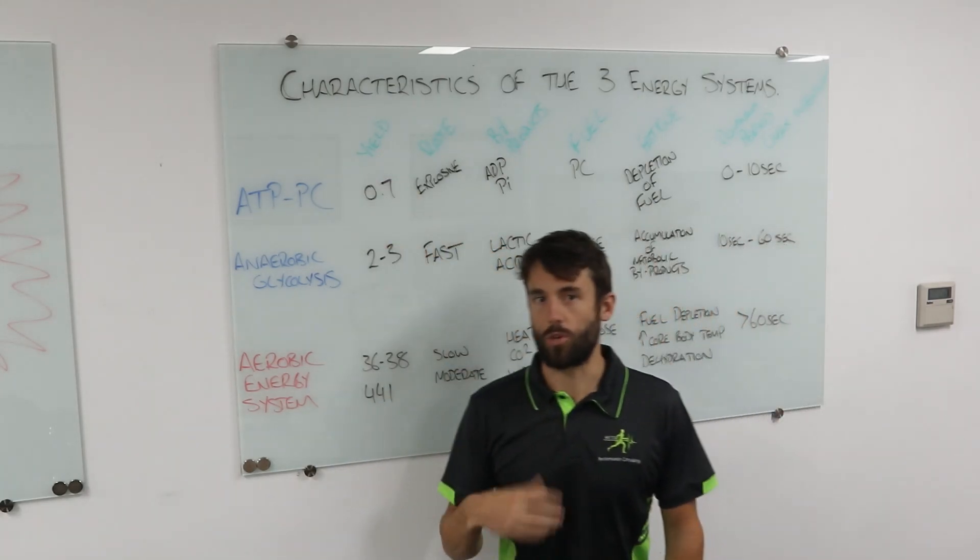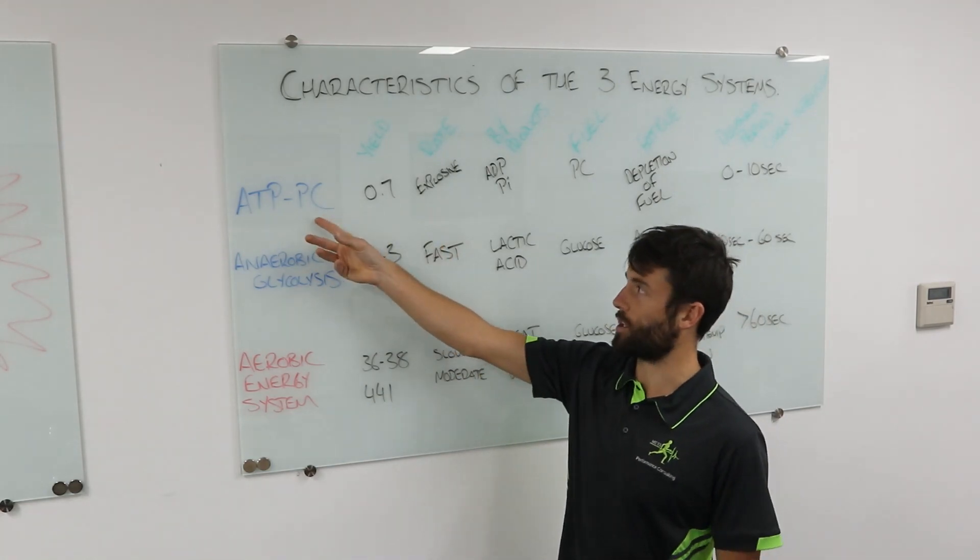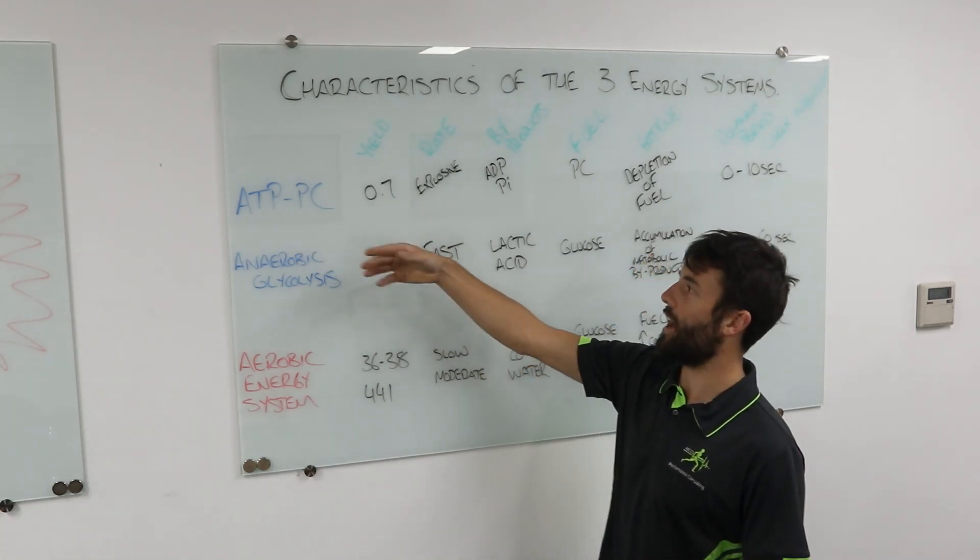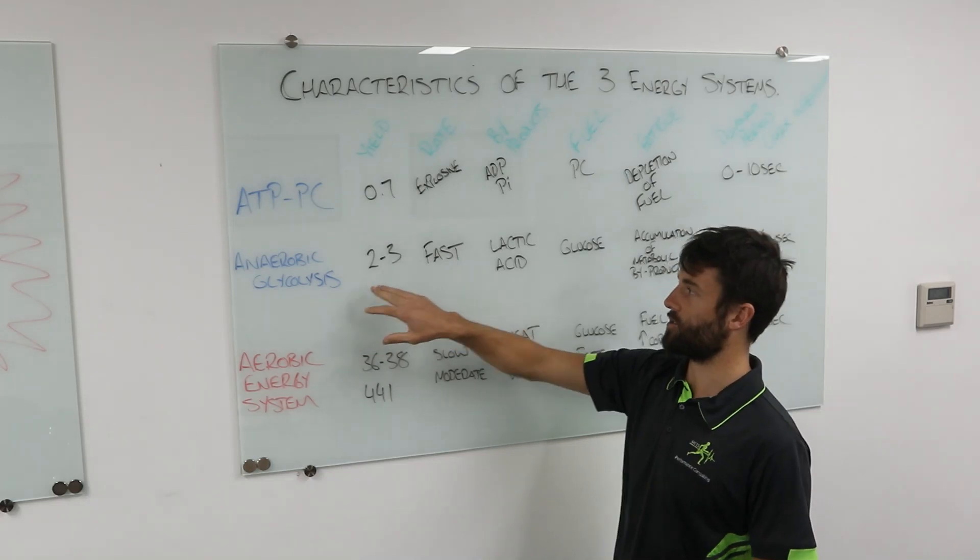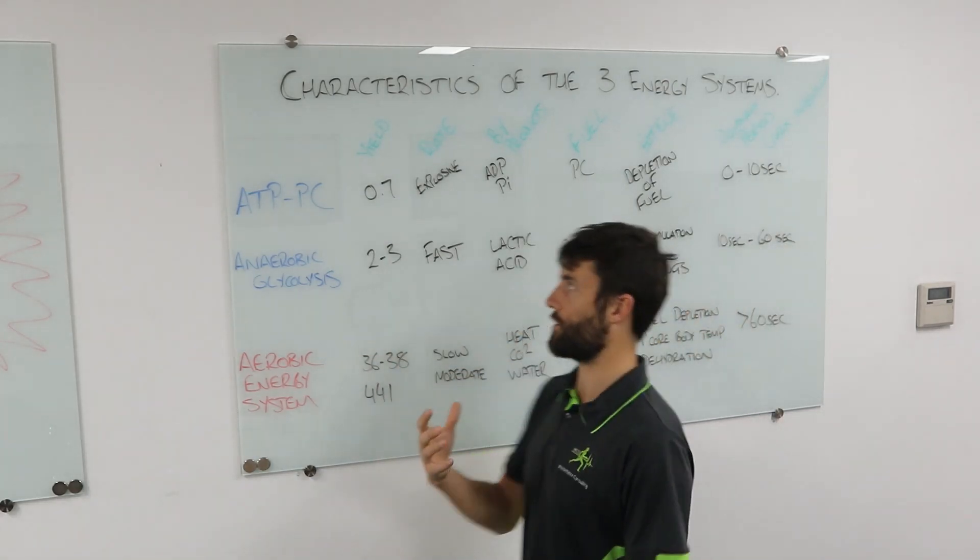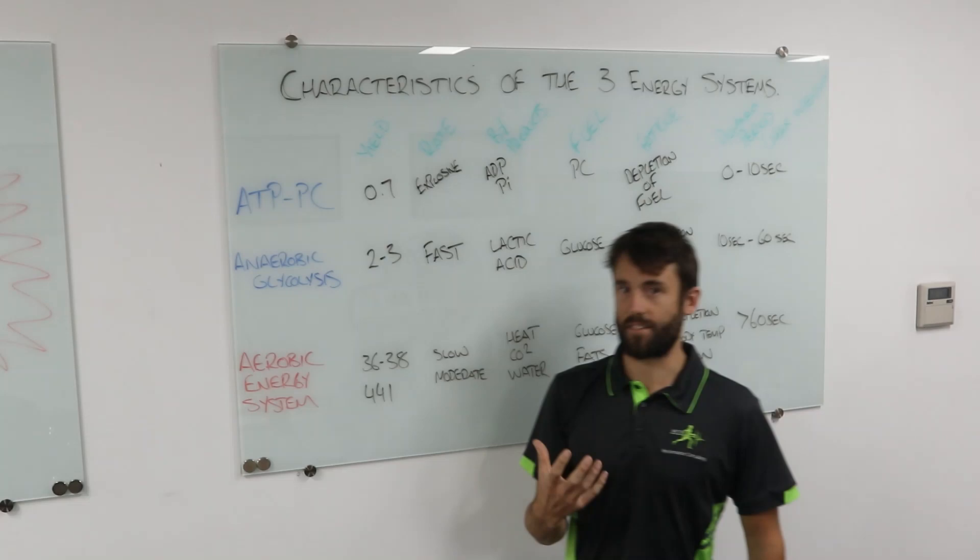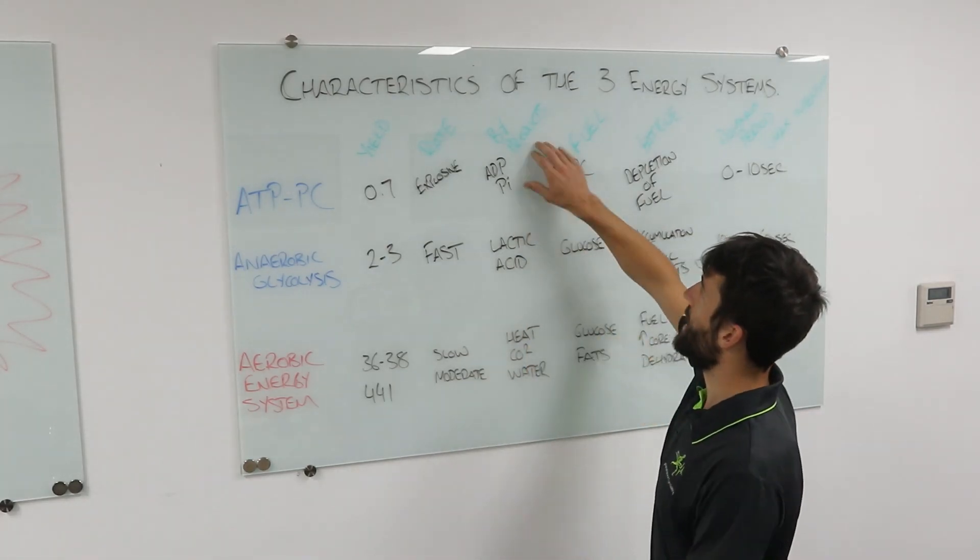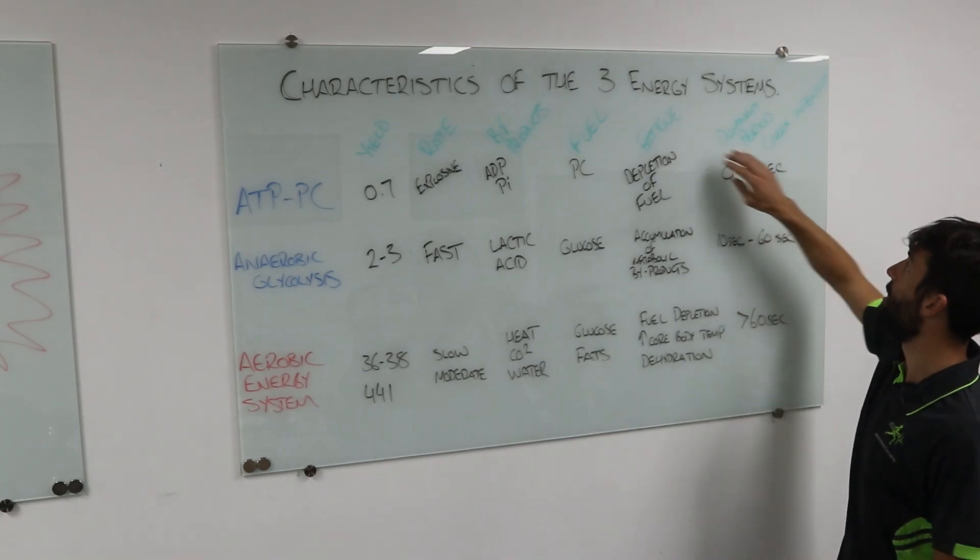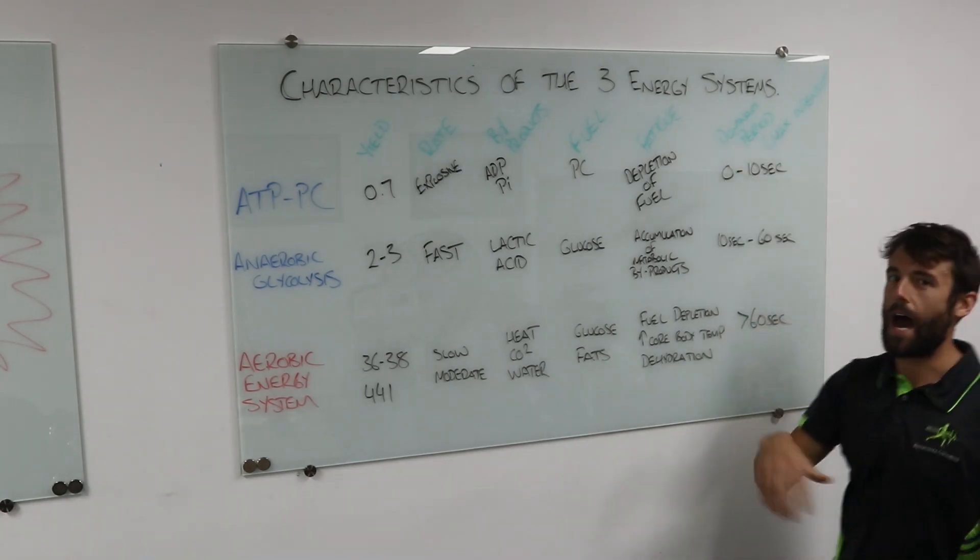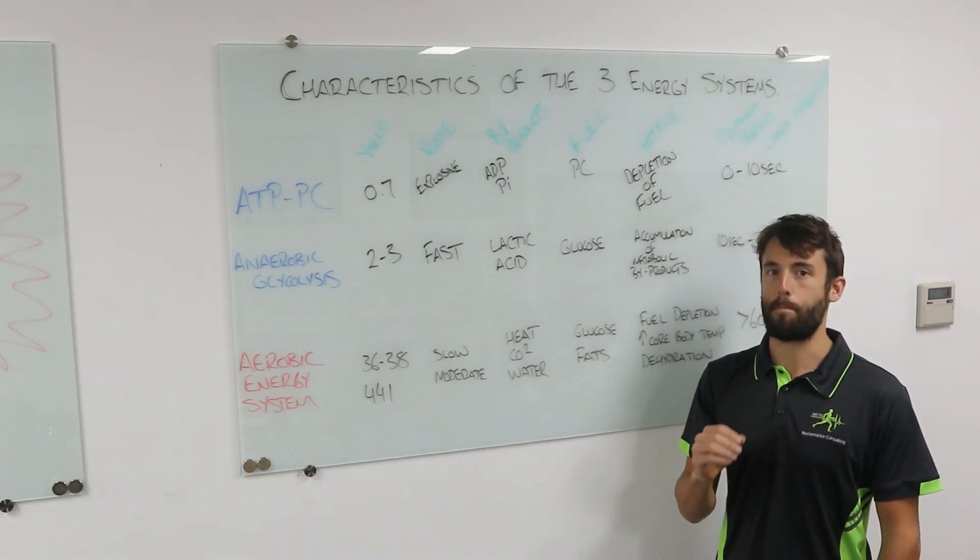A few of those words. Yield: when we see that term yield, we're talking about how many ATP molecules we can resynthesize per fuel molecule. Rate: how fast do we get these ATPs resynthesized. Any byproducts that we get, what is the fuel source, what is going to be the cause of fatigue associated with each energy system, and how long will they remain dominant for at a maximum intensity. That's important. When we talk about how long an energy system will be dominant for, we talk about that at maximum intensity.